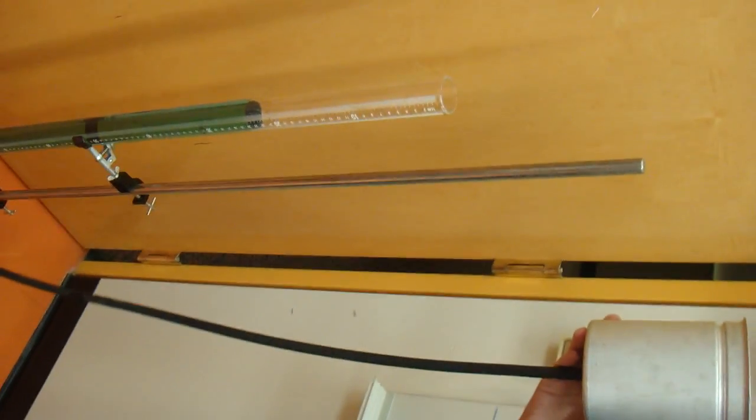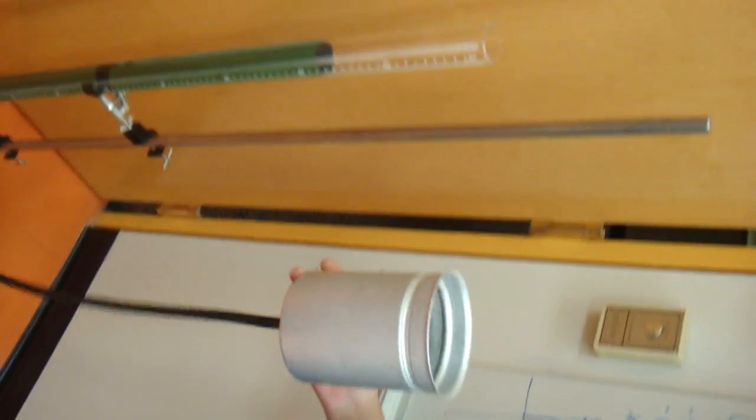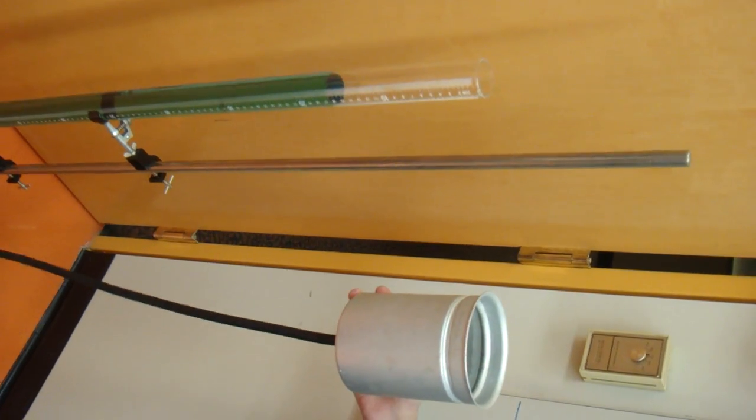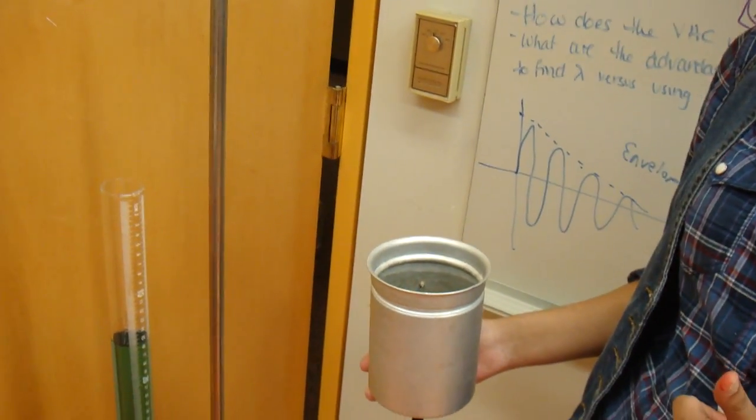And the water is currently an interesting shade of blue because it was food dyed for visibility. And this concludes our demonstration of how to use the variable water column.